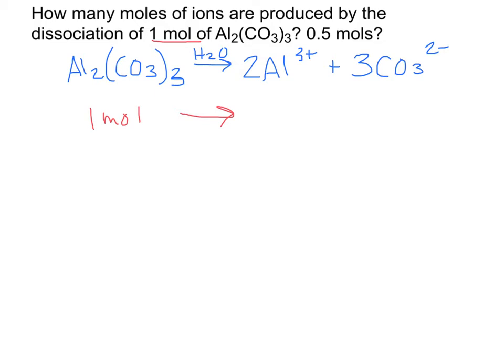In our original problem we have one mole, asking how many moles of ions are produced. That means we'd end up with two moles of aluminum and three moles of carbonate. The question asks for total moles of ions.